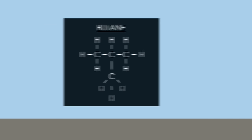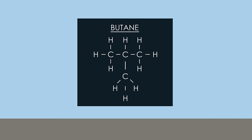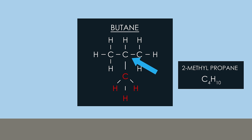The longest chain in this molecule is three carbon atoms long, so we say it is a form of propane with a methyl group attached to the second or middle carbon atom, so its name becomes 2-methylpropane.